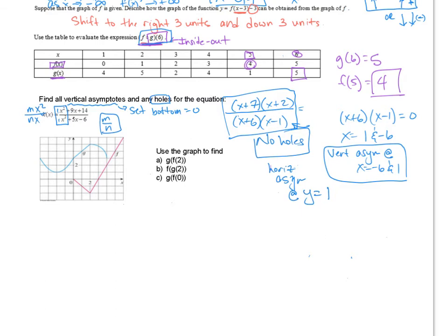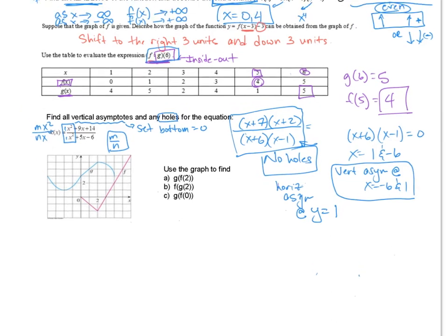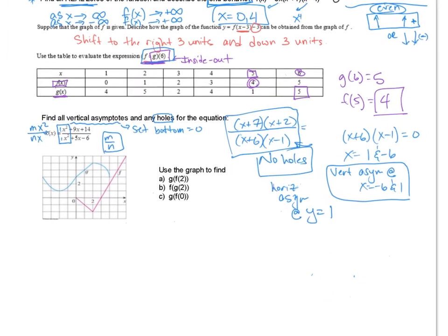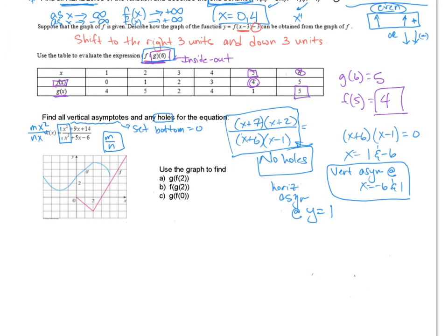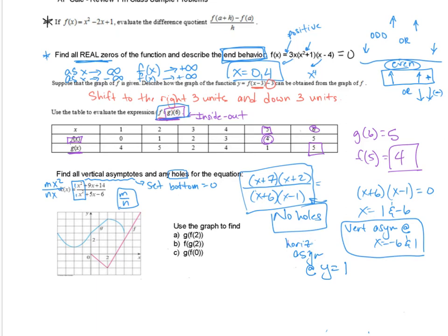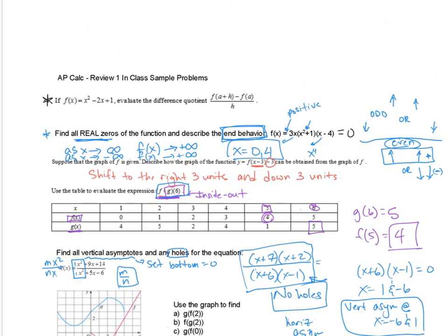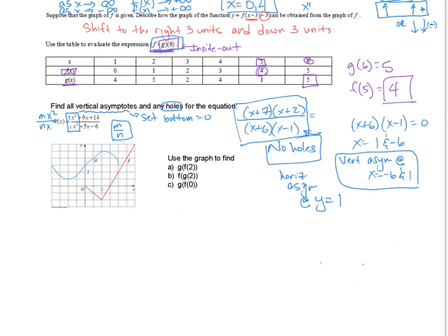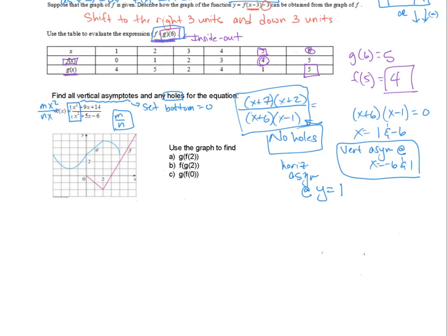This next one is a great AP test question — there are a few on this review that show up on AP-type exams. The table composition question is something they love. You'll see the difference quotient too, but in a different form — we'll talk about that when we get there. This next question is an excellent example of what you will see on an AP test.